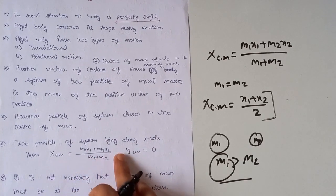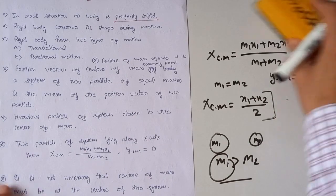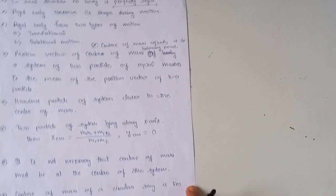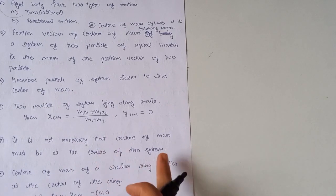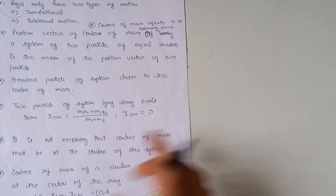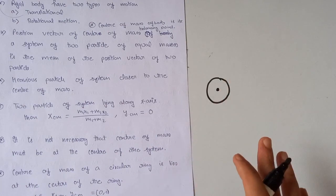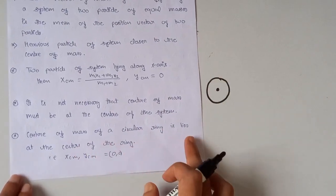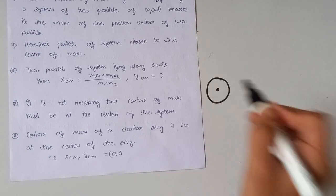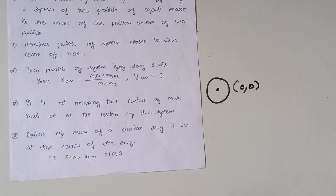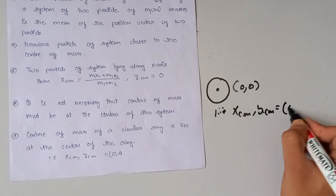If two particles of the system lie along the X-axis, the center of mass along the X-axis is calculated normally, and the center of mass along the Y-axis is equal to zero. It is not necessary that the center of mass must be at the geometric center of the system. For a circular ring, the center of mass always lies at the center of the ring, and its coordinate is (0, 0).